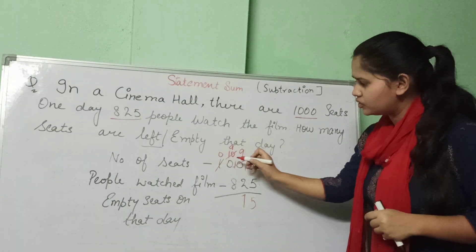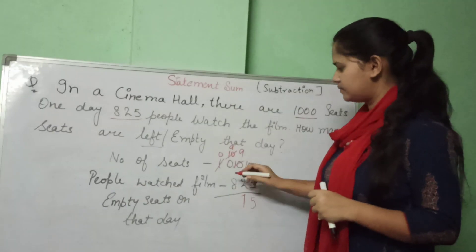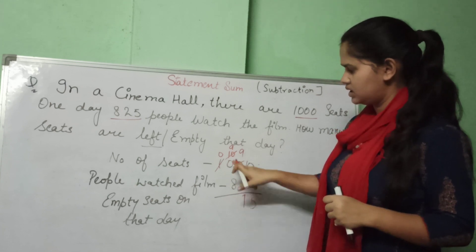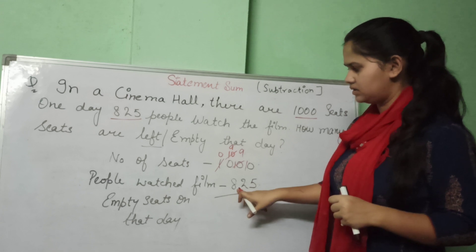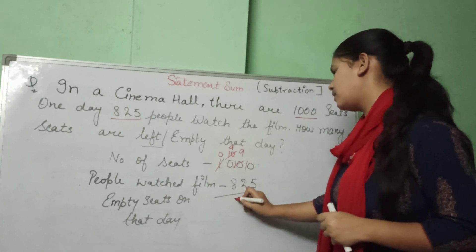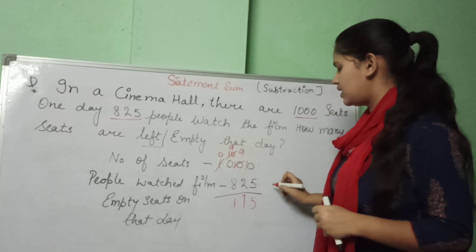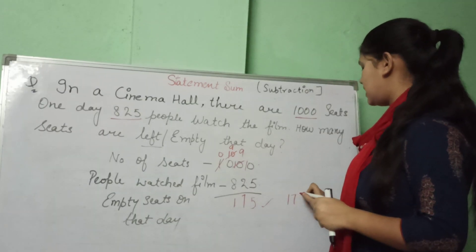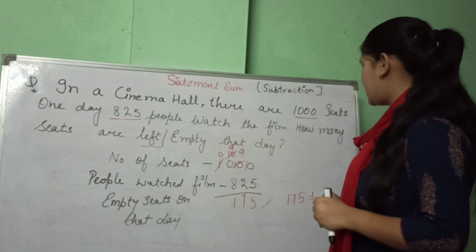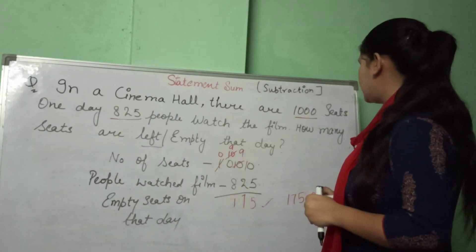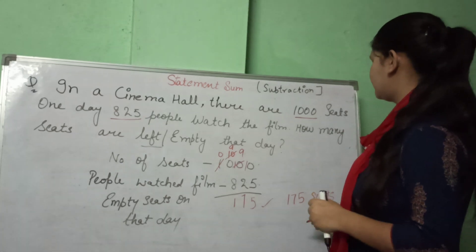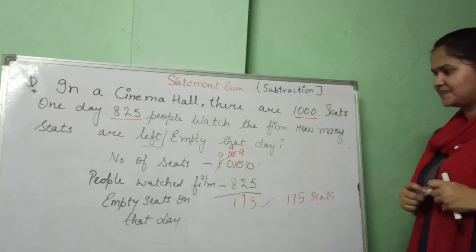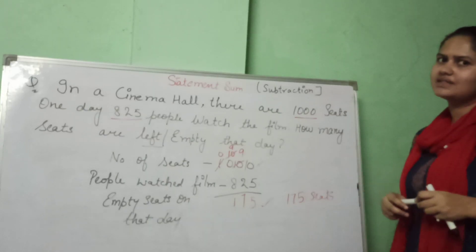Now the hundreds place is 9. We subtract 8 from 9, which gives 1. The answer is 175. That day, 175 seats were empty out of 1,000. This is your answer for the second statement sum.